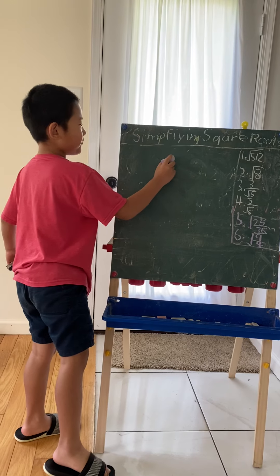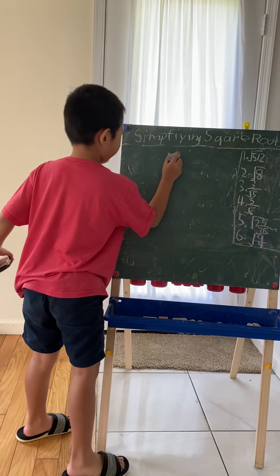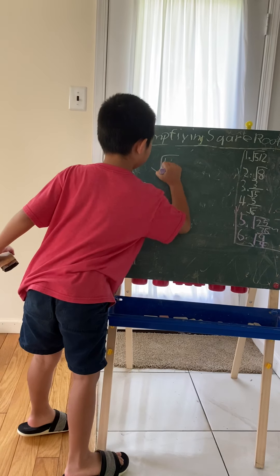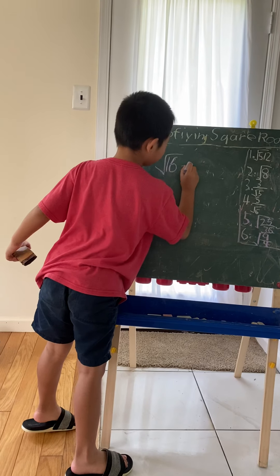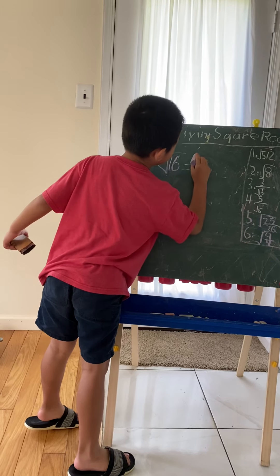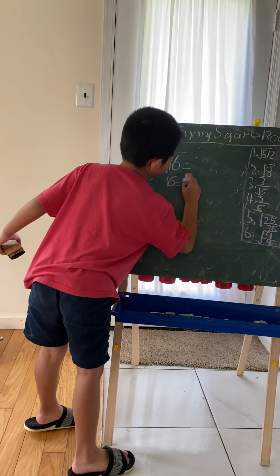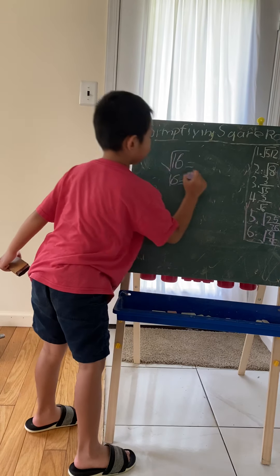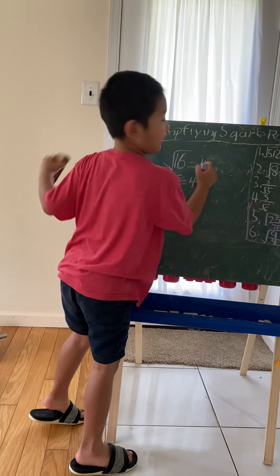Maybe you'll get an example where we end up with the square root of 16. We know the square root of 16 equals 4 squared, which means the square root of 16 is 4.